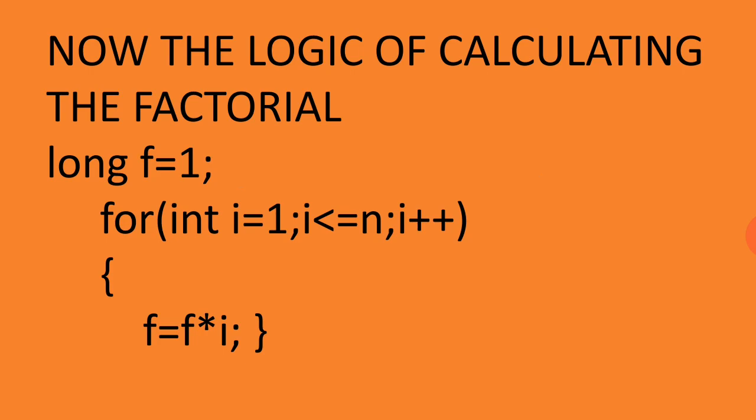When we have to multiply, you've seen in the example 1×2×3×4 up to n, that means I have to have a loop. int i initialized with 1, that is the initialization expression, then i less than equal to n, then i will be increased by 1.